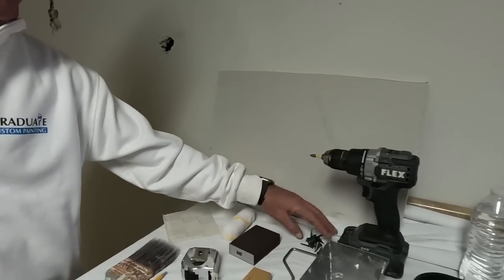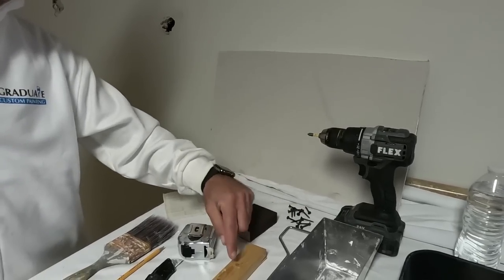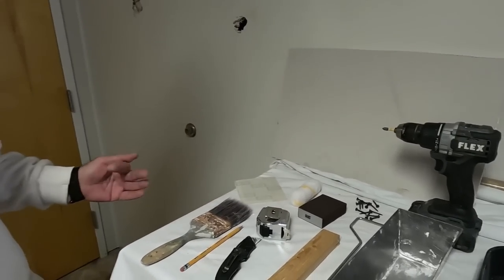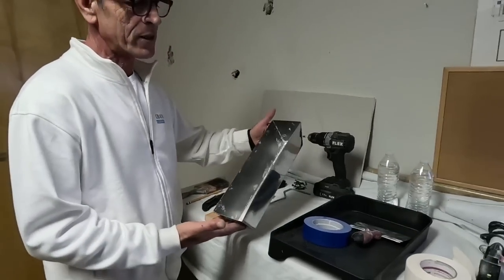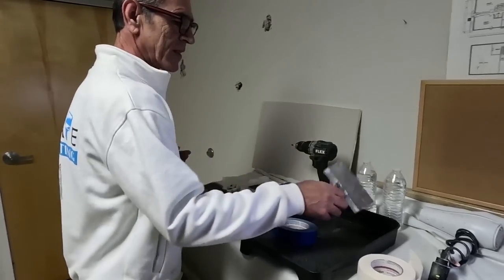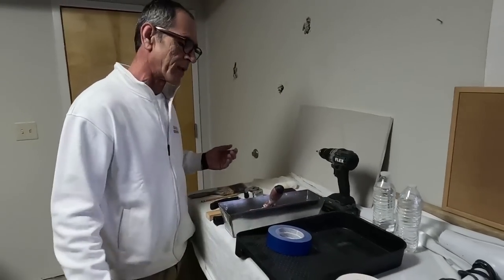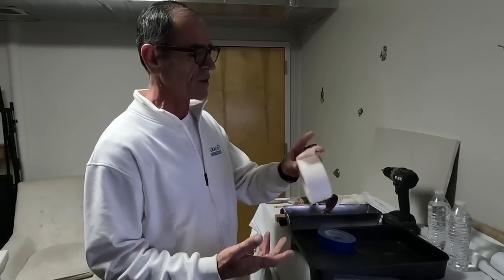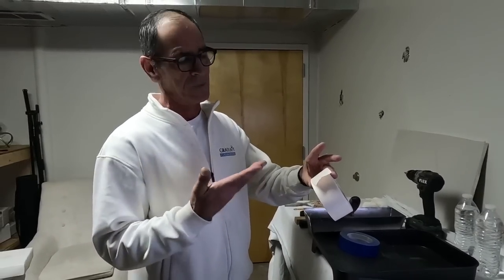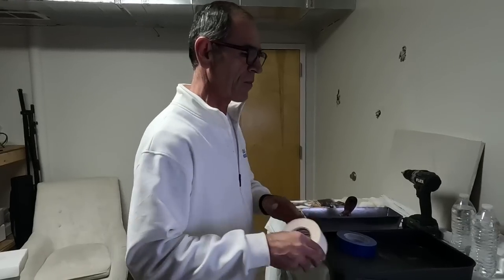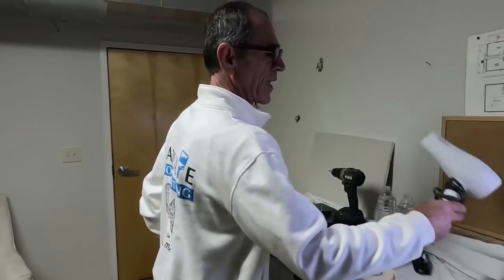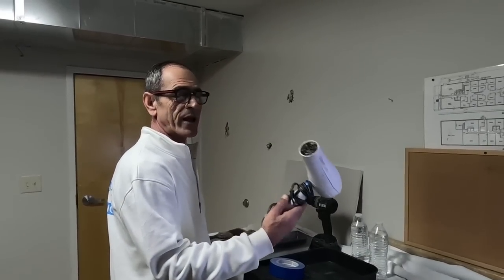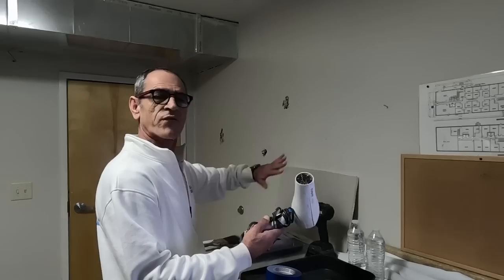Then I have some screws to anchor this wood onto the wall. And I have my mud pan and a mud knife when we start mudding. I brought some tape. So on one of these patches, I'll use tape to do the job properly. And I brought a hair dryer to make this whole process faster.